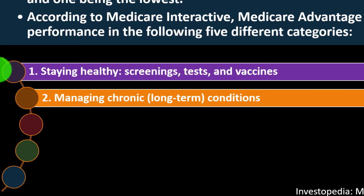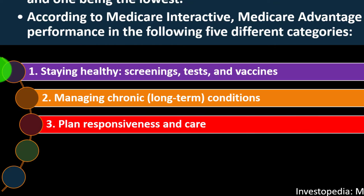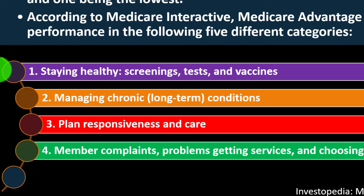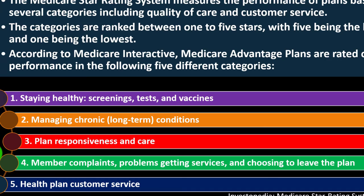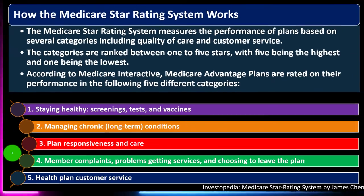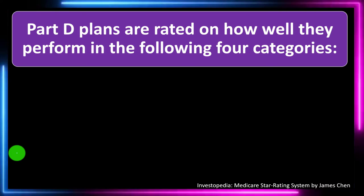Category two is managing chronic long-term conditions. Category three is plan responsiveness and care — how responsive the plan is and the quality of care provided. Category four is member complaints, problems getting service, and choosing to leave the plan. Category five is health plan customer service, which is obviously a big component of the overall rating.